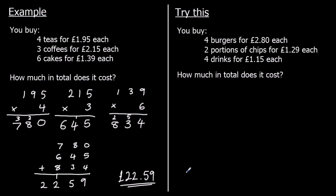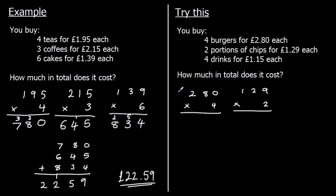One for you to try here, so pause the video and give it a go. We've got four burgers for two pounds eighty each, so 280p times four. Two portions of chips for one pound twenty-nine each, so 129p times two. And four drinks for one pound fifteen each, so 115p times four.